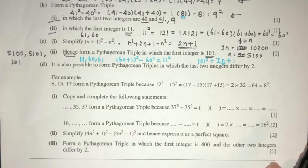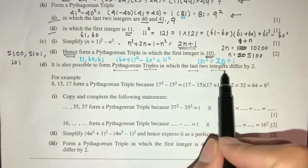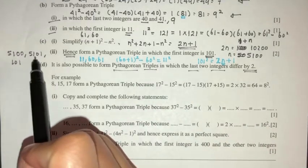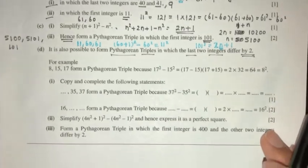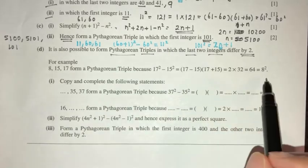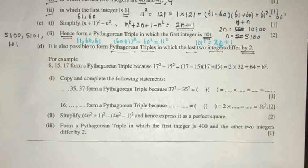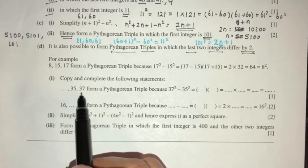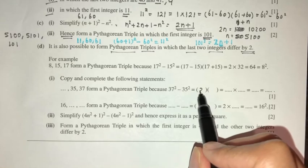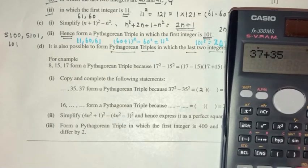For part D, it is also possible to form Pythagorean triples where the last two integers differ by 2. For example, 8, 15, 17. To complete the statement for 35 and 37: 37 squared minus 35 squared equals 37 minus 35, times 37 plus 35, which equals 2 times 72.